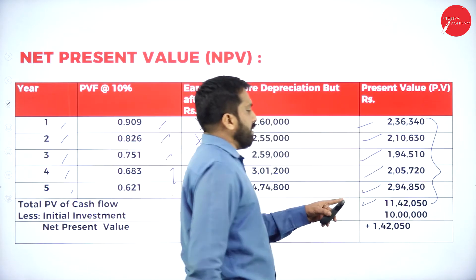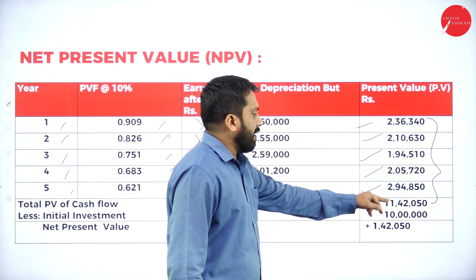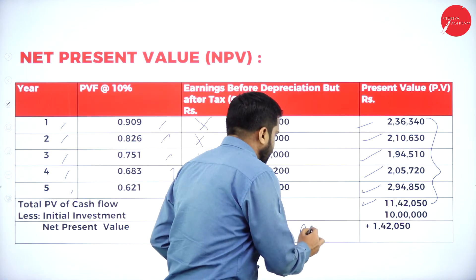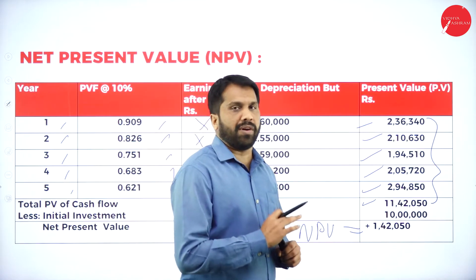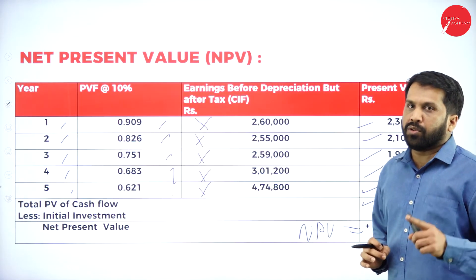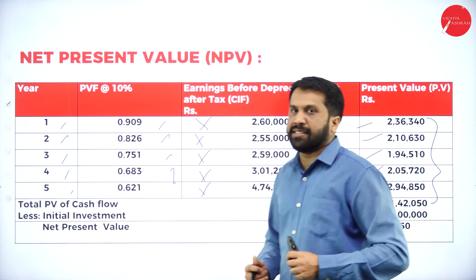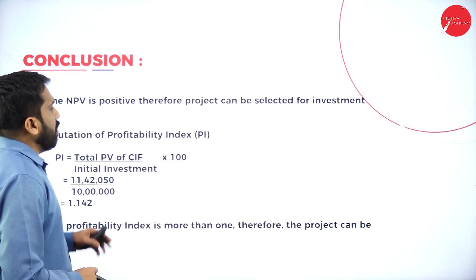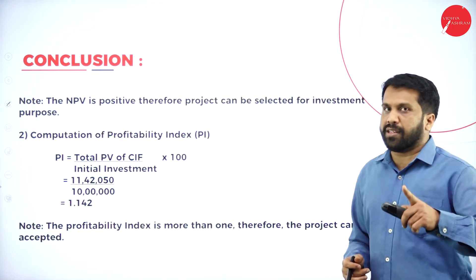After adding all present values you get 11 lakh 42. What is your investment? 10 lakh. So 11 lakh 42 minus 10 lakh = 1 lakh 42 is your net present value. Hope that is clear — easiest one! Now once you are done with NPV, you have to find out the profitability index.